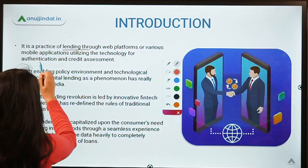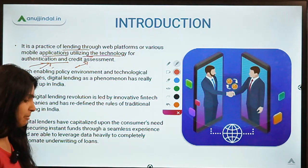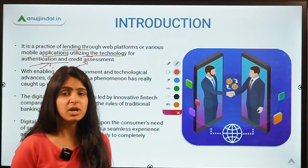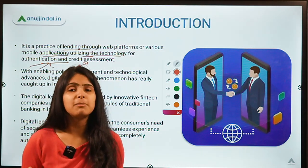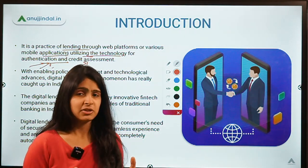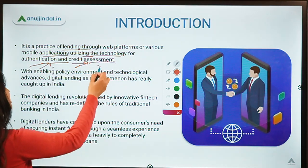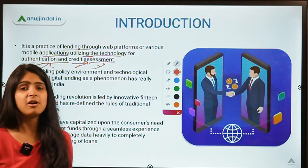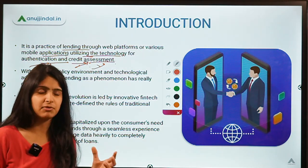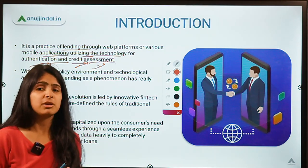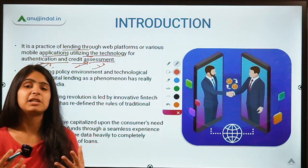Digital lending happens through web platforms or mobile applications, utilizing technology for authentication and credit assessment. Authentication means identifying the party you are lending to. Credit assessment means checking whether the borrower is creditworthy — whether you will get your money back. It is a very difficult process. All the big credit rating agencies in the world are in this business, providing ratings and assessing credit risk so investors can understand whether they are lending to a creditworthy entity.